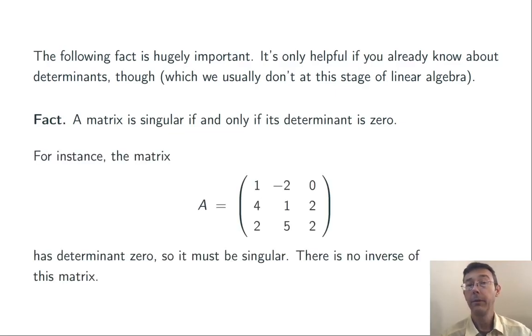So, for example, this 3 by 3 matrix has determinant 0. And therefore, we know that there can be no inverse. We don't have to go to any long computation to show that. We just know it by computing the determinant.